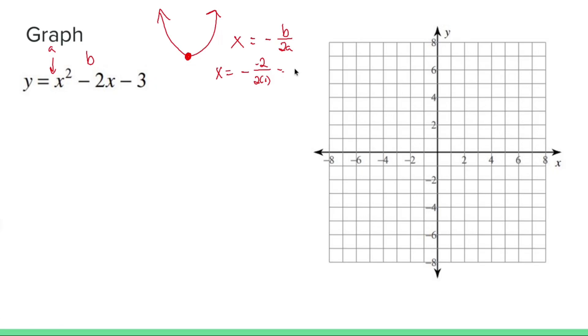So negative 2 over negative 2 is positive 1. So the center of my graph exists when x equals positive 1. So I'm going to make myself a nice little table of x values. The center happens at 1.